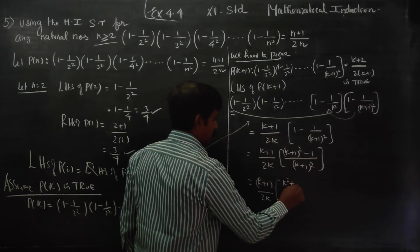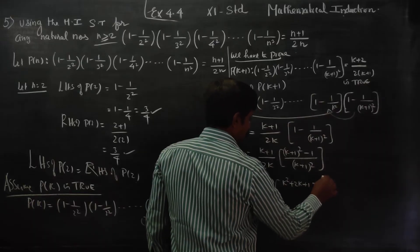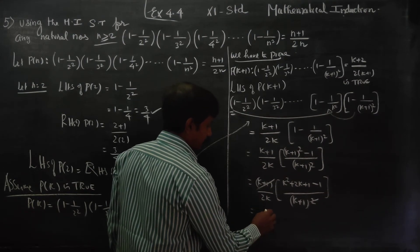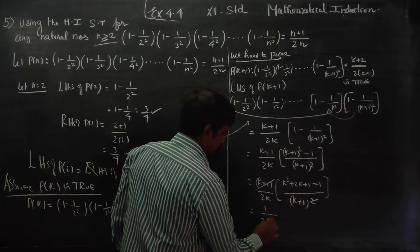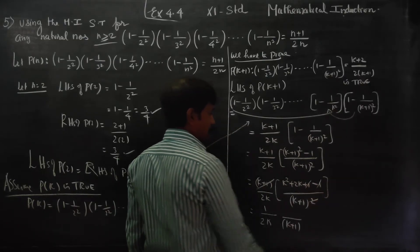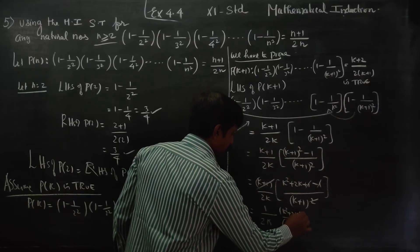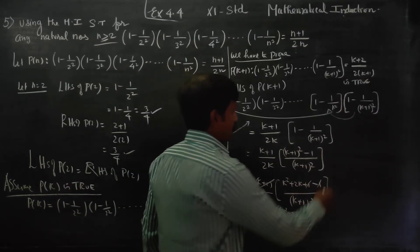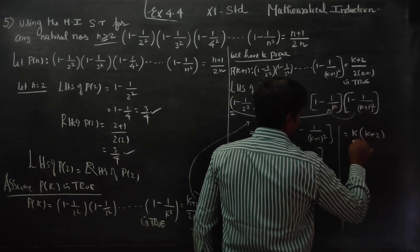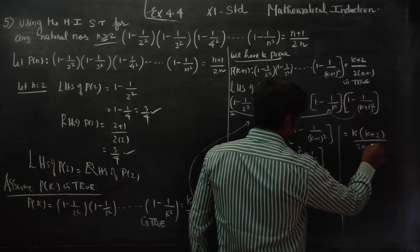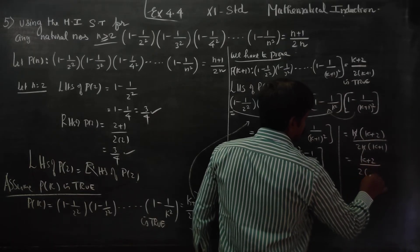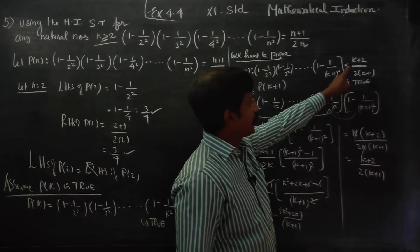Now, what is a plus b whole square? It is a square plus 2ab plus b square. Expanding k plus 1 whole square gives k squared plus 2k plus 1, minus 1. The k plus 1 whole square terms cancel. Taking k common in the numerator gives k plus 2, divided by 2k into k plus 1. After cancelling k, the answer is k plus 2 by 2 into k plus 1.